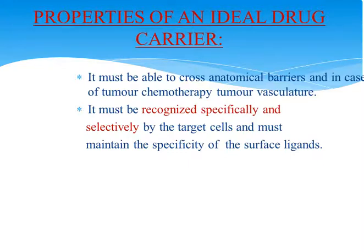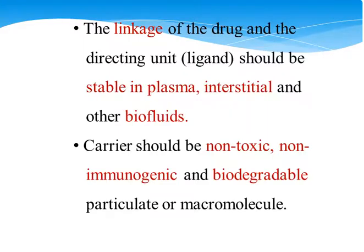Next are the properties of an ideal drug carrier. It must be able to cross the anatomical barriers and in case of tumor chemotherapy, the tumor vasculature. It must be recognized specifically and selectively by the target cells and must maintain the specificity of the surface ligands. The linkage between the drug and the ligand should be stable in plasma, interstitial and other biofluids. Carriers should be non-toxic, non-immunogenic, biodegradable particle or macromolecule.